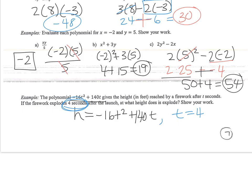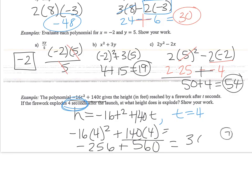So I'm going to do negative 16, 4 squared plus 140 times 4. So negative 16 times 16 is negative 256 plus 140 times 4. So 140 times 4 is 560. So 560 plus negative 256 is 304. And we're talking about feet. That's the height. So 304 feet is the answer.